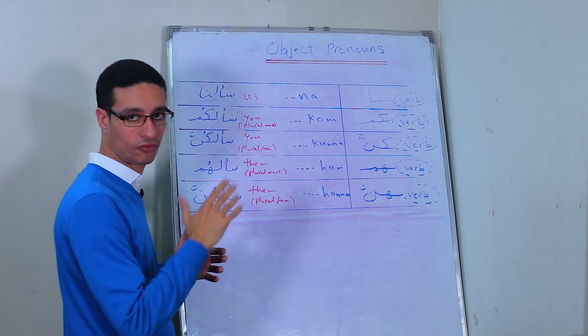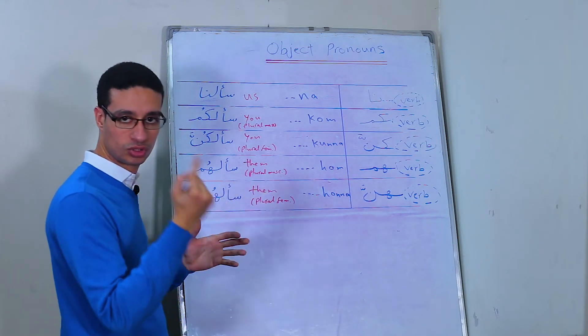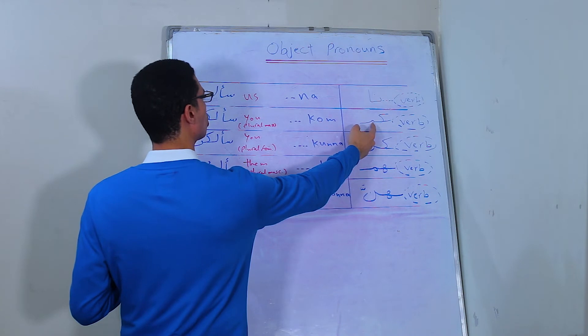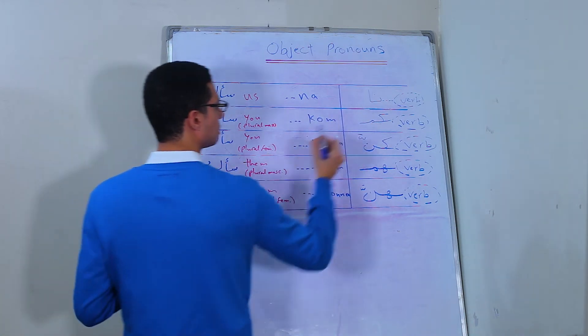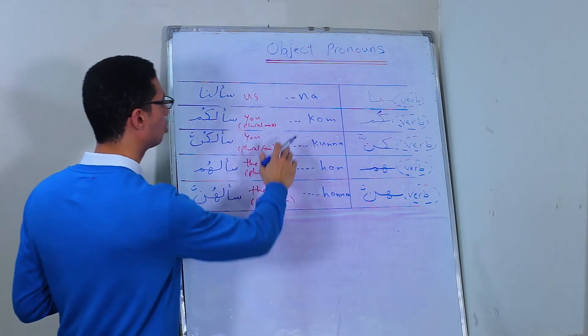If you're talking to a group of guys or a group containing at least one guy, it's سألكم, which is كم. And here there is ضمة. Here كم. سألكم.